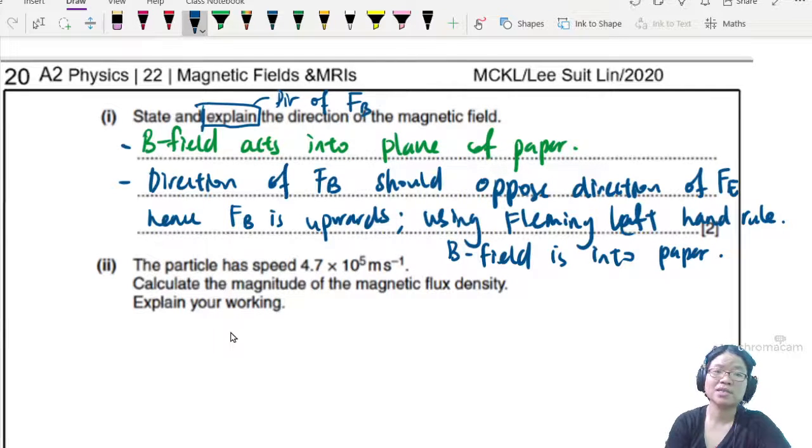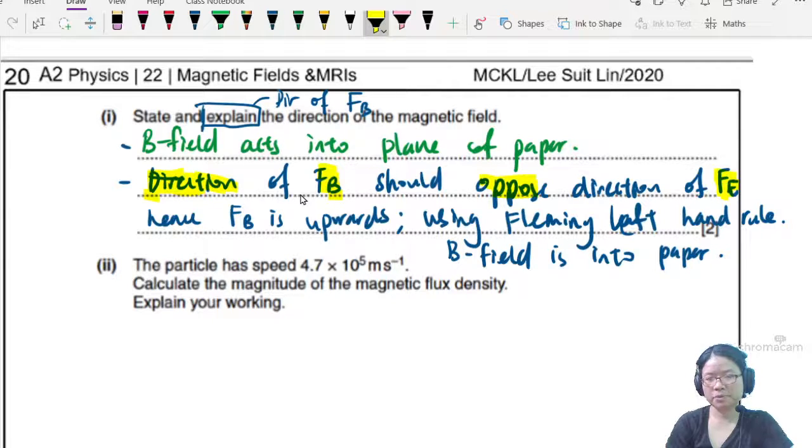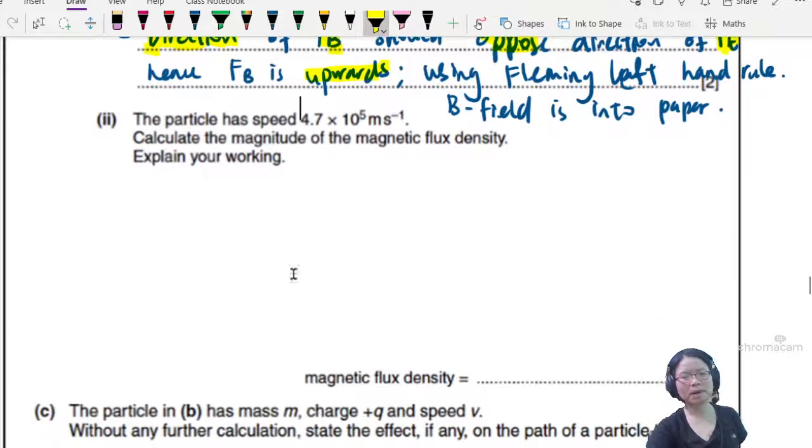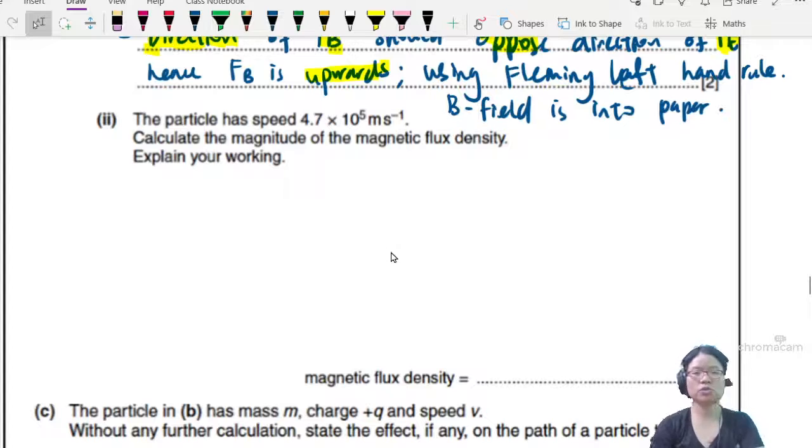Part two: the particle has speed 4.7 × 10^5 m/s. Calculate the magnitude of magnetic flux density. Explain your working. So the first part of explanation, I will say that for undeviated path, the particle moves in a straight line.